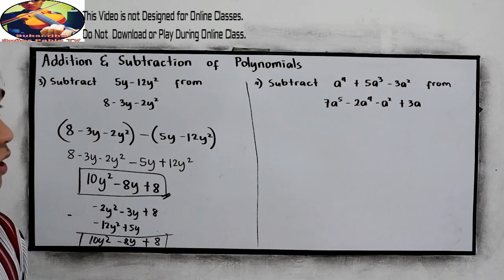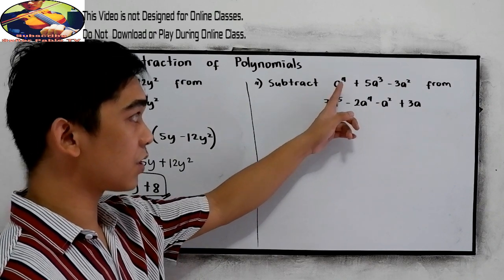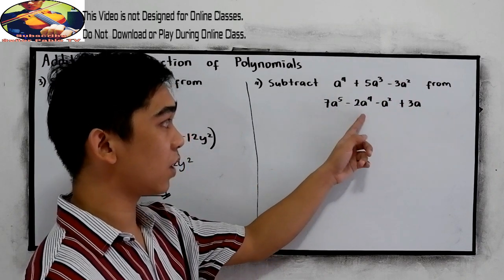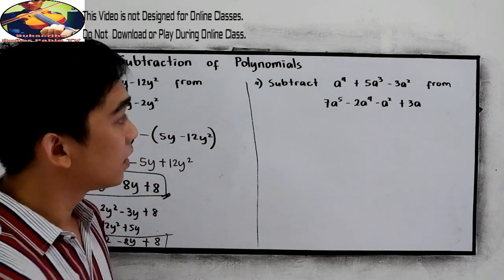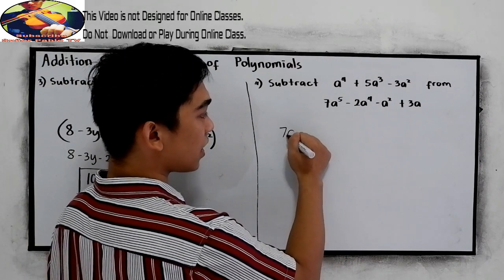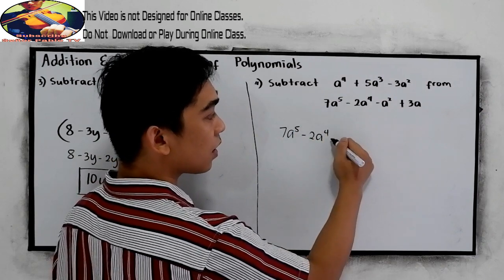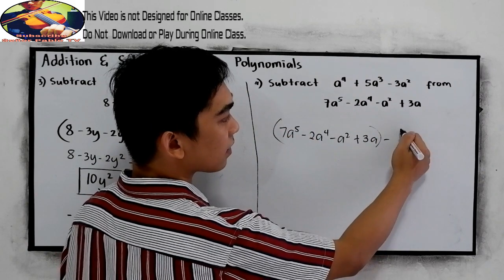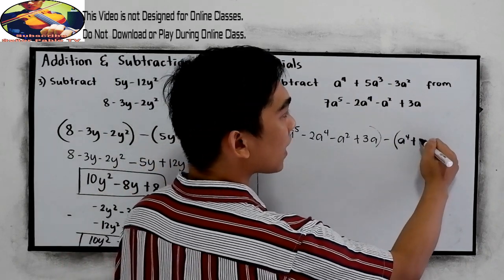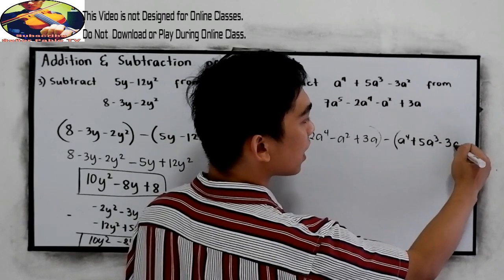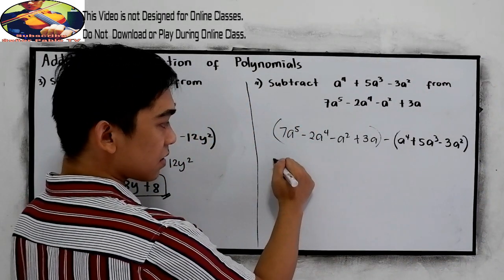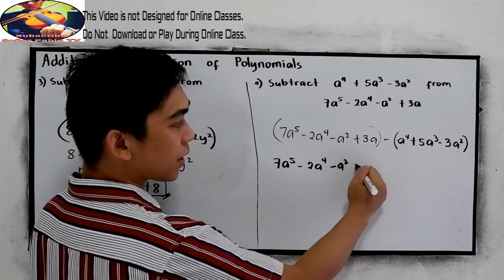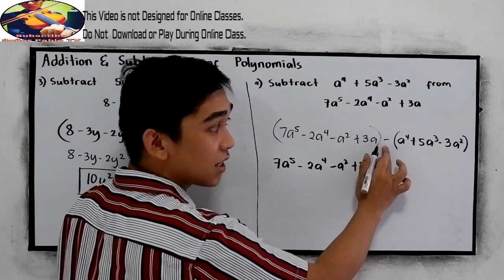Now in example 4, subtract a raised to the 4th plus 5a cubed minus 3a squared from 7a raised to the 5th minus 2a raised to the 4th minus a squared plus 3a. Copy 7a raised to the 5th minus 2a raised to the 4th minus a squared plus 3a, then subtract a raised to the 4th plus 5a cubed minus 3a squared. Remove the parenthesis and distribute the negative outside.